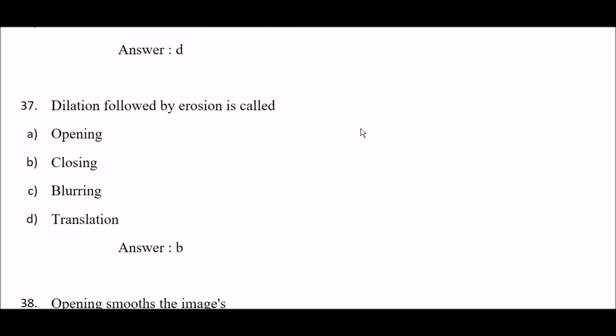Next question: dilation followed by erosion is called — option A: opening, option B: closing, option C: blurring, option D: translation. The right answer is option B — closing. Dilation followed by erosion is called closing.